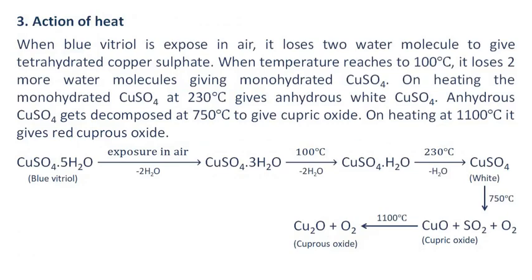Action of heat: when blue vitriol is exposed to air, it loses two water molecules to give tetrahydrated copper sulfate. When the temperature reaches 100 degrees Celsius, it loses two more water molecules, giving monohydrated copper sulfate. Heating monohydrated copper sulfate at 230 degrees Celsius gives anhydrous white copper sulfate. Anhydrous copper sulfate decomposes at 750 degrees Celsius to give cupric oxide, and on heating at 1100 degrees Celsius it gives red cuprous oxide.